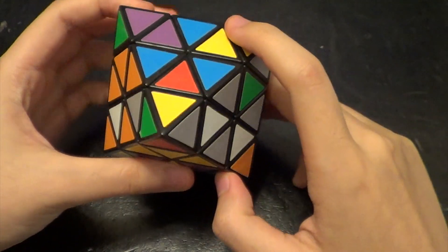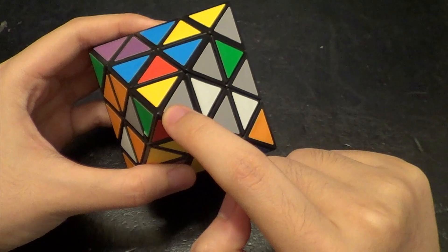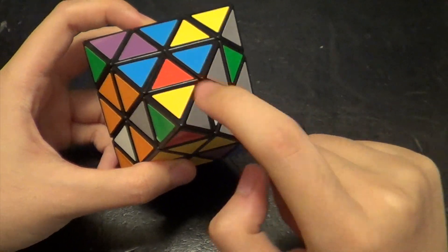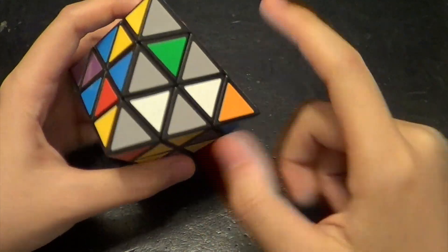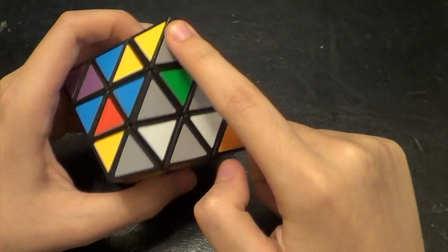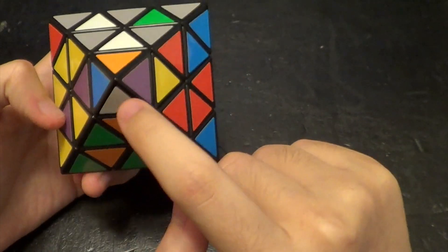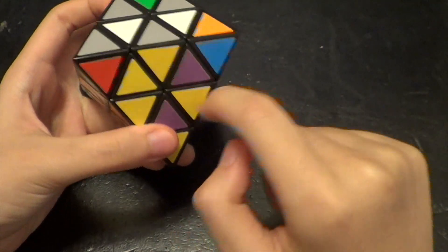So for example, we can see that this corner is not where it belongs because it's yellow, green, and red, but it should be blue, orange, and yellow, which is actually right over here, and then this should come over here where there's the red, green, and yellow.